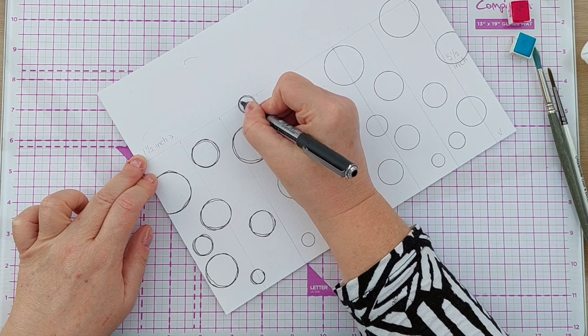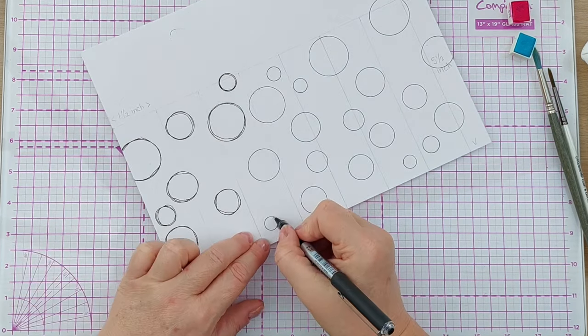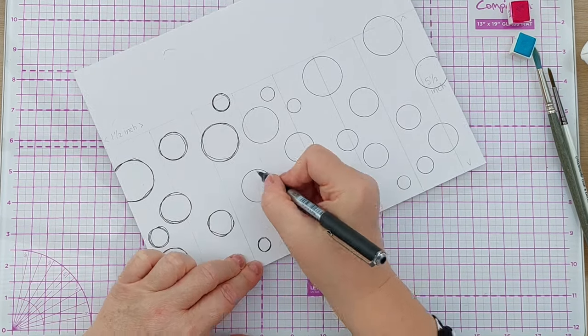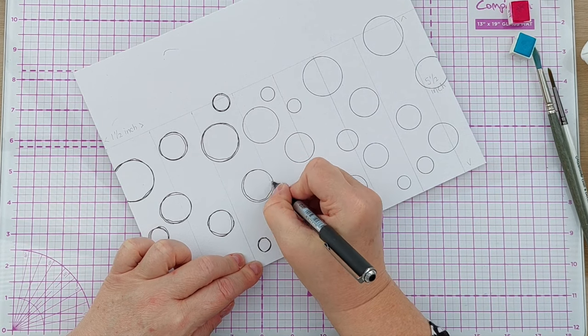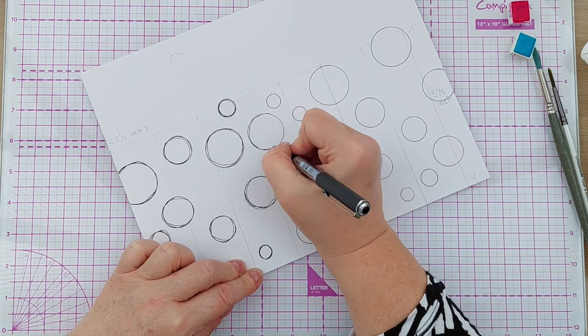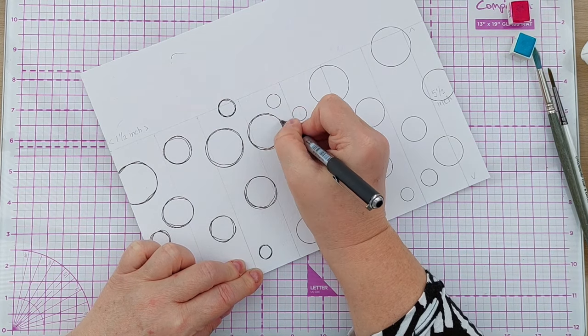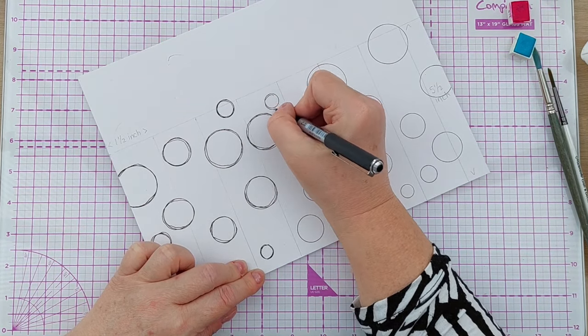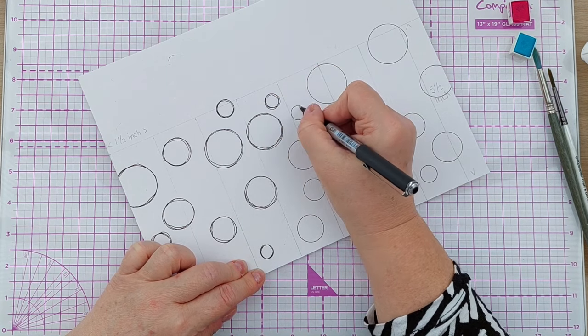And the reason I use the stencil to start with is to make sure they do actually look like circles and don't end up looking like eggs or something. So I'll do that to all of them, and once I've done this I will give it a blast with my hair dryer to make sure the ink is completely dry before I add any color to them. So waterproof pens only become waterproof when they dry.